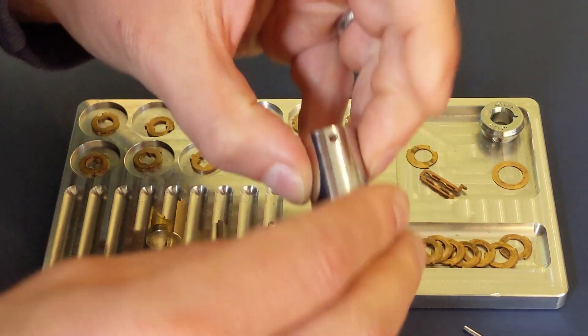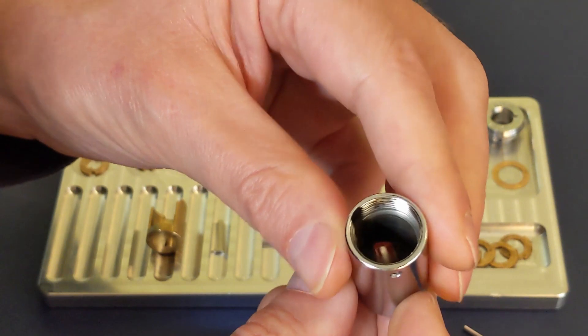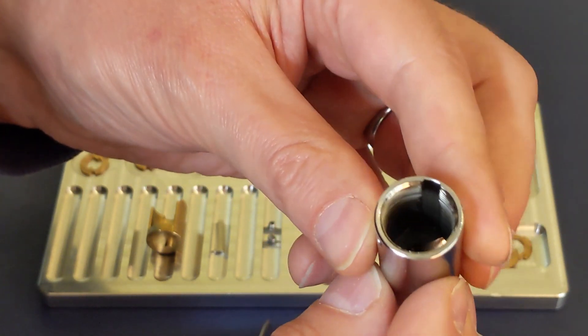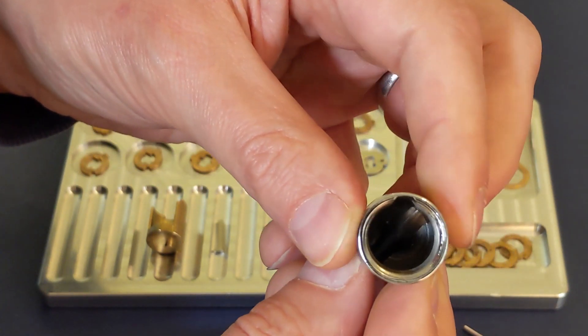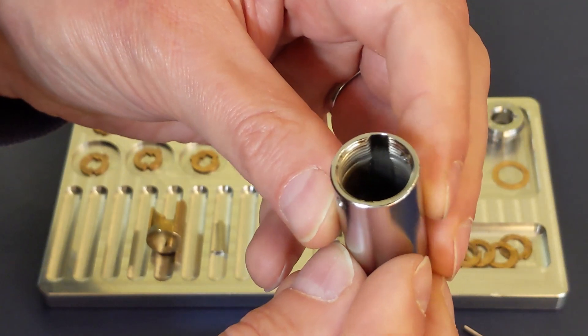Let's have a look at the body of the lock as well. Here we go. Just a very simple thing. But you can see there the groove that the sidebar runs in.